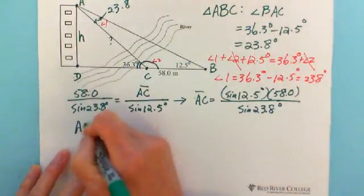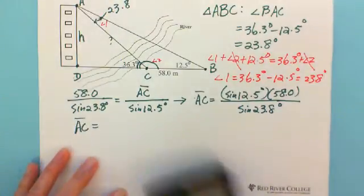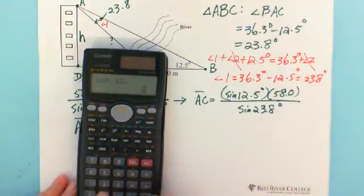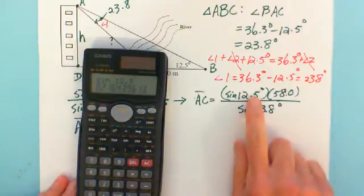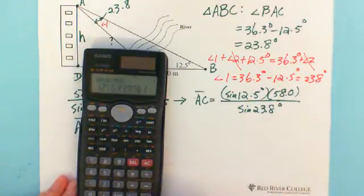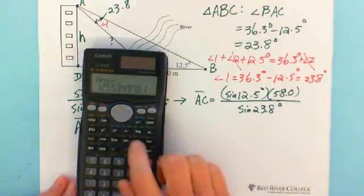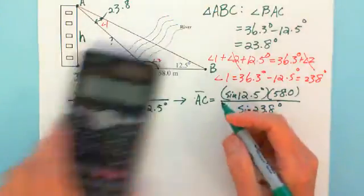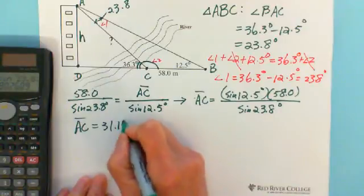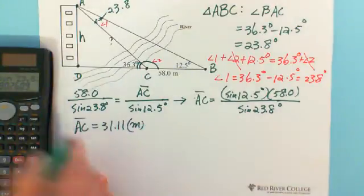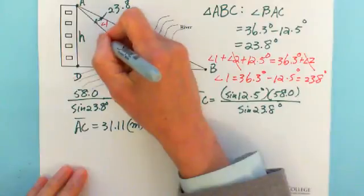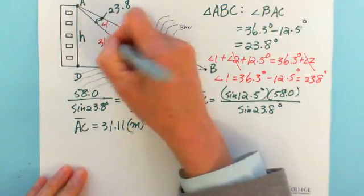We calculate sine 12.5, multiply by 58, and divide by sine 23.8. The answer is 31.11. We got AC equal to 31.11 meters. Once you got AC, you can label this length as 31.11 meters.